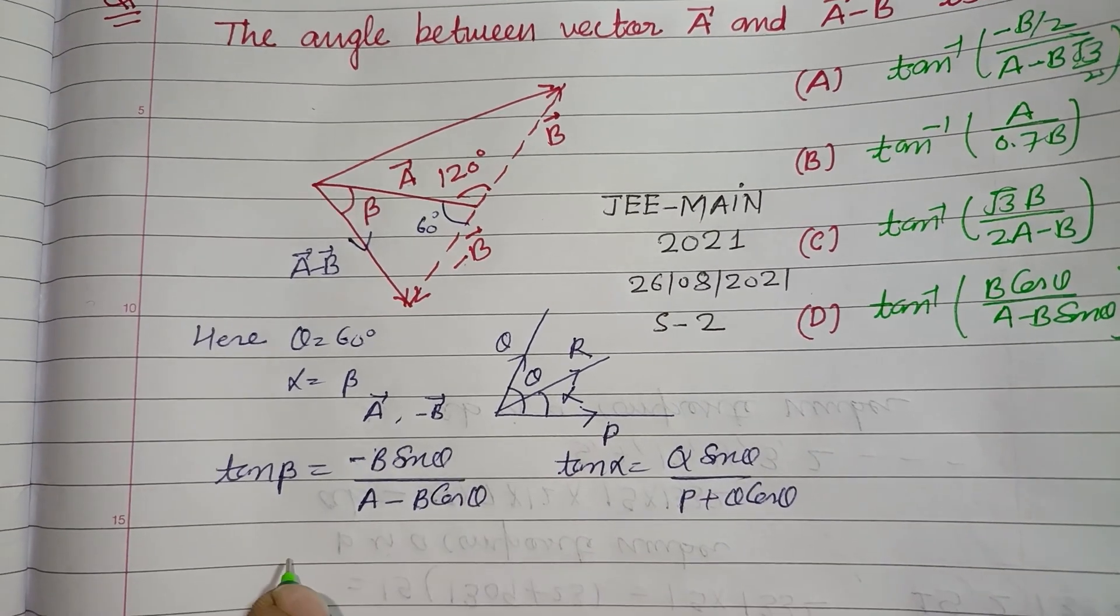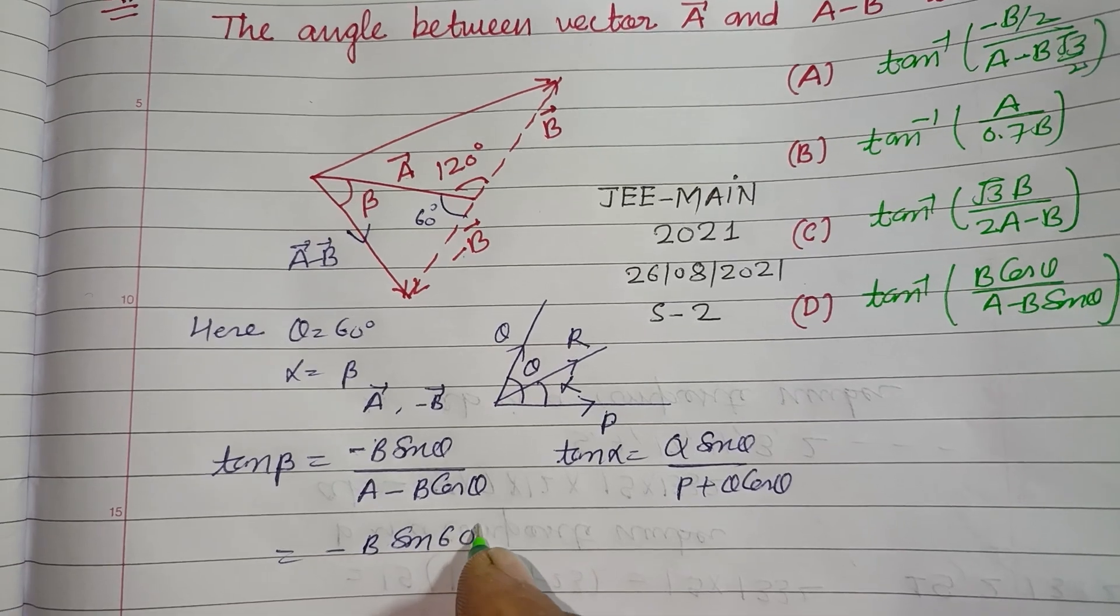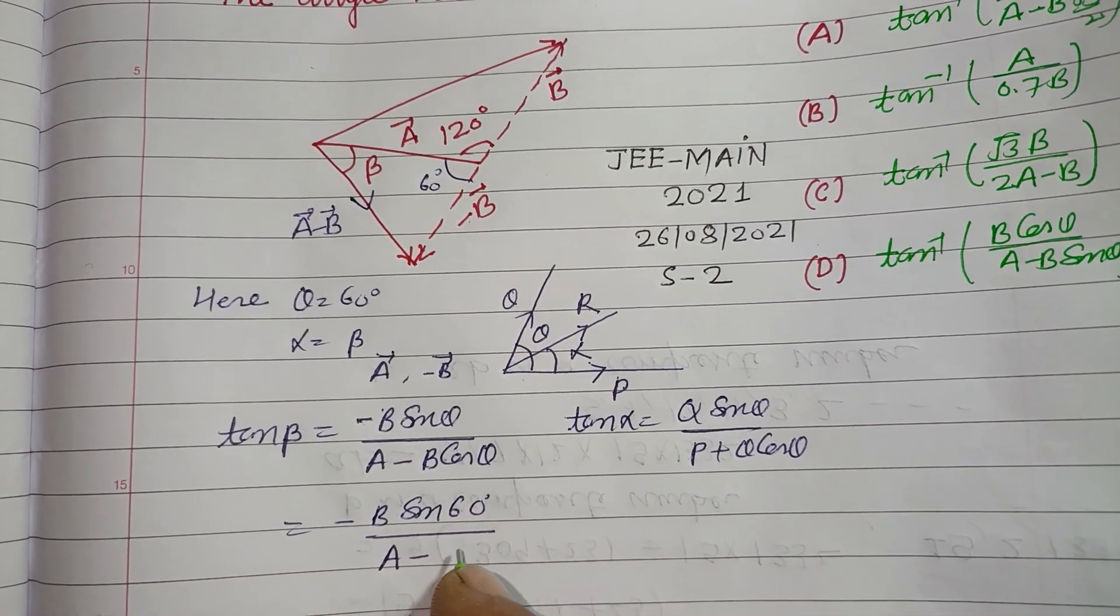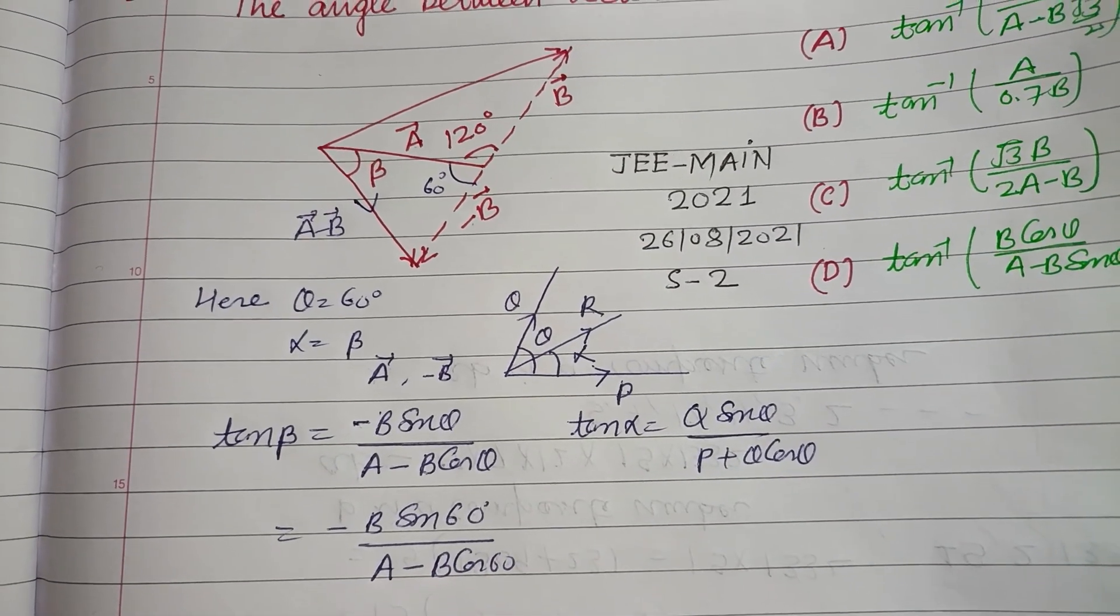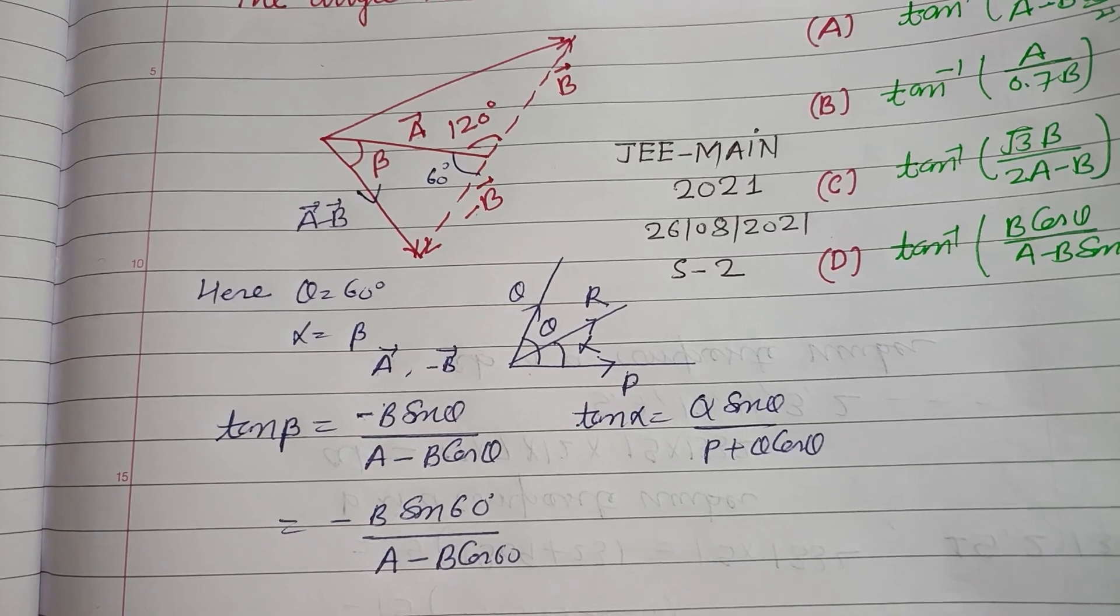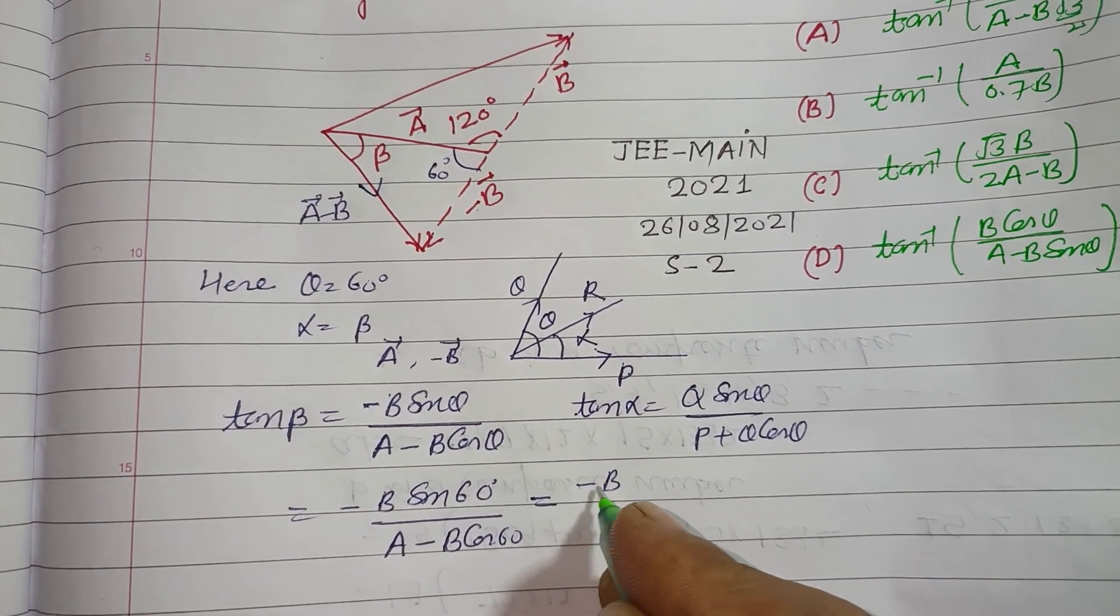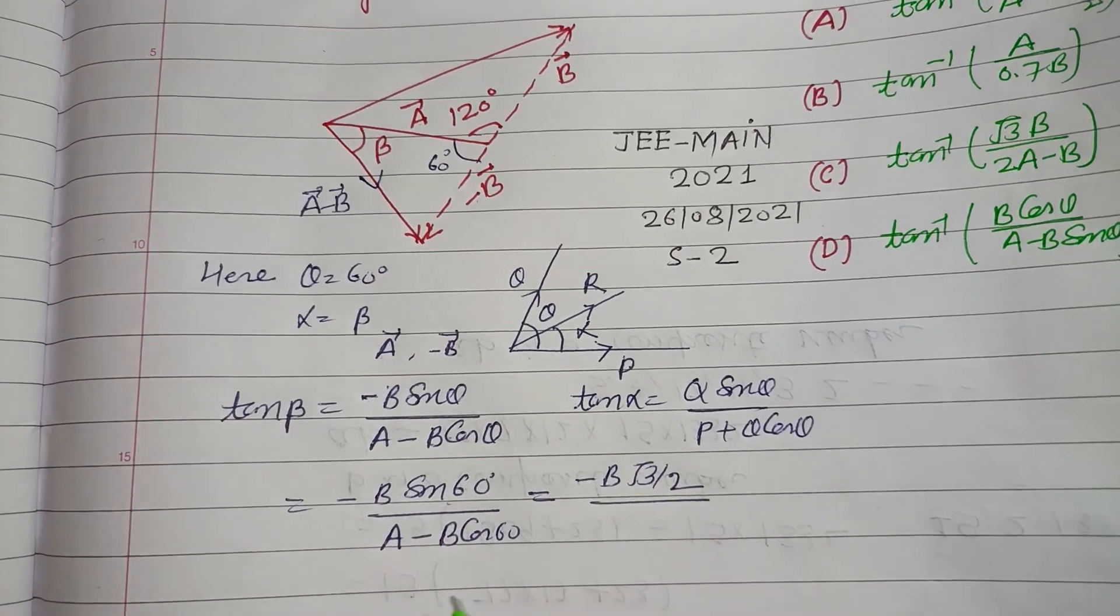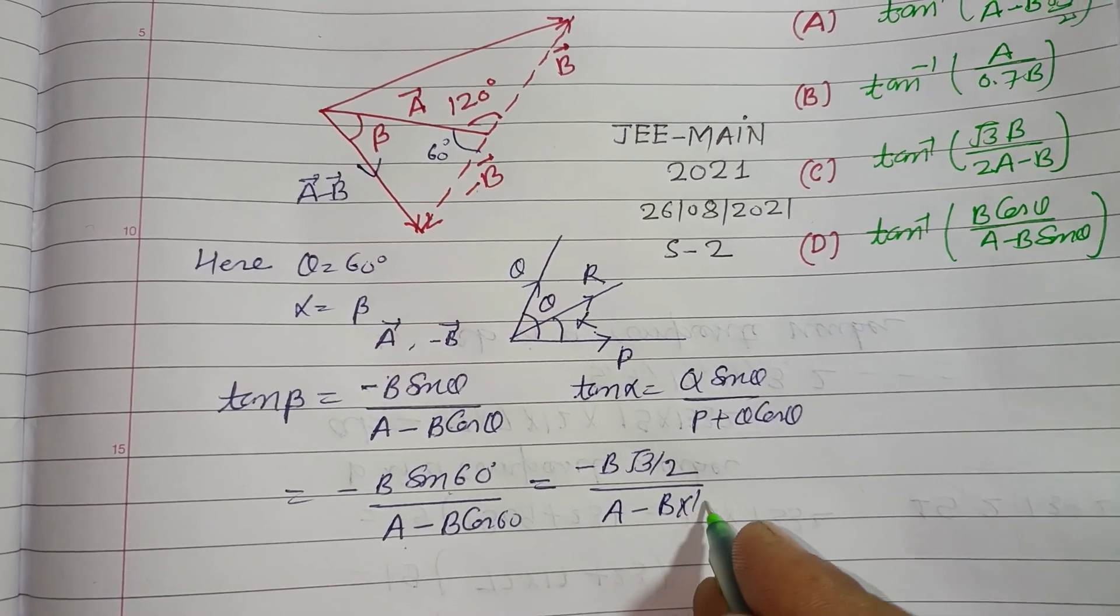And theta is sin 60 over A minus B cos 60, and this will be B sin 60 is root 3 by 2 upon A minus B cos 60 is 1 by 2.